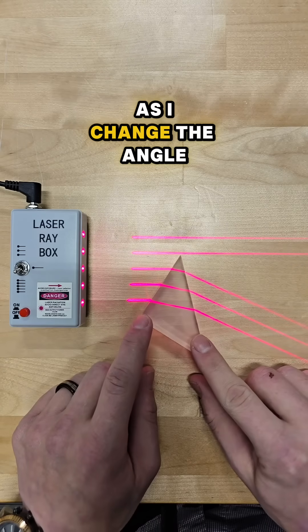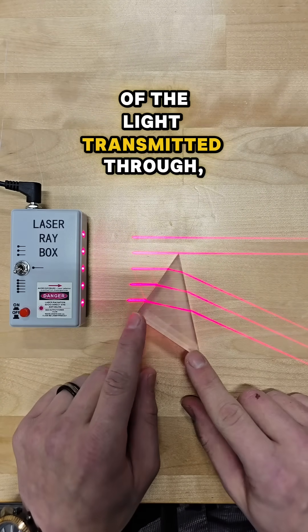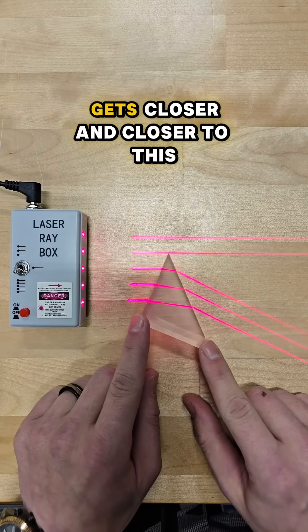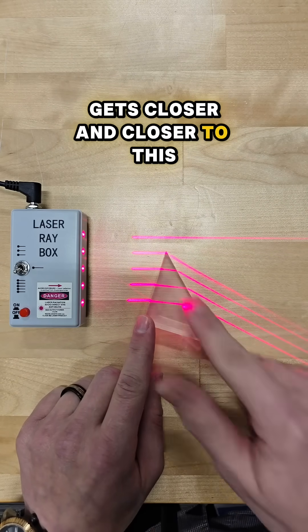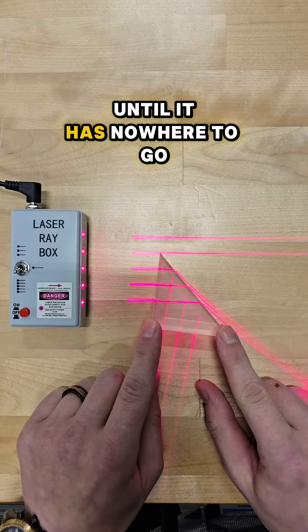As I change the angle of a piece of glass like this prism, you see that the angle of the light transmitted through these refracted rays gets closer and closer to this glass surface until it has nowhere to go.